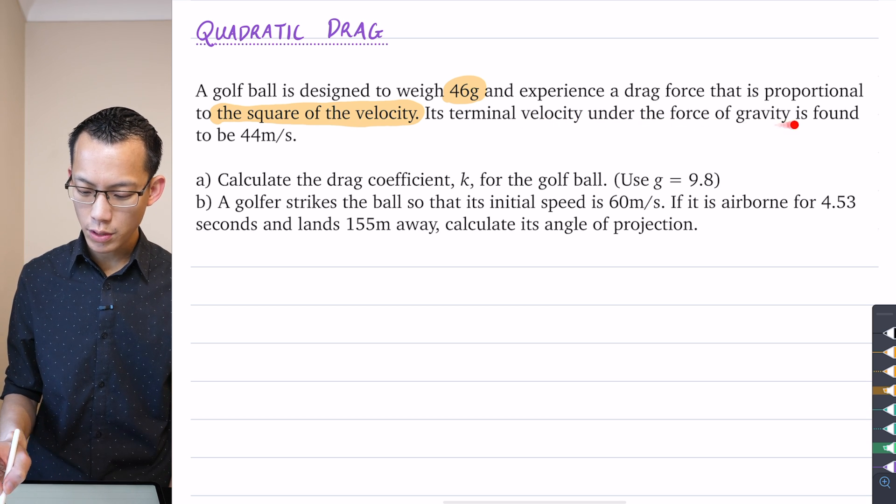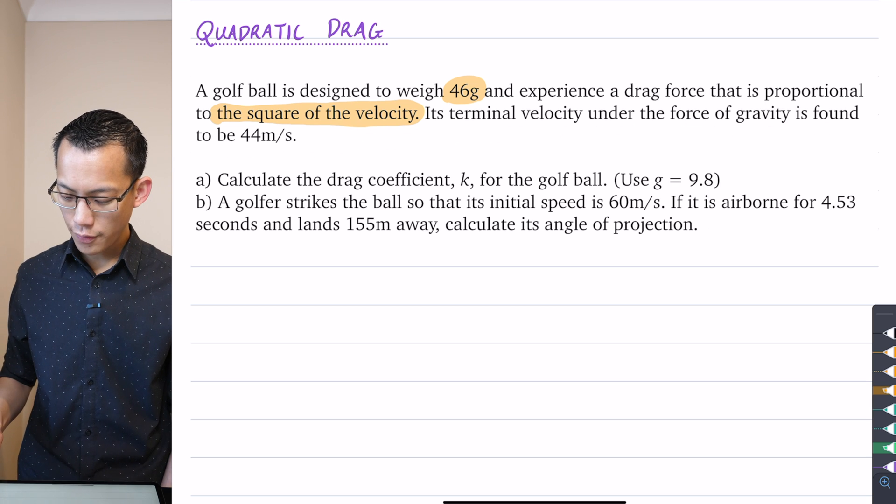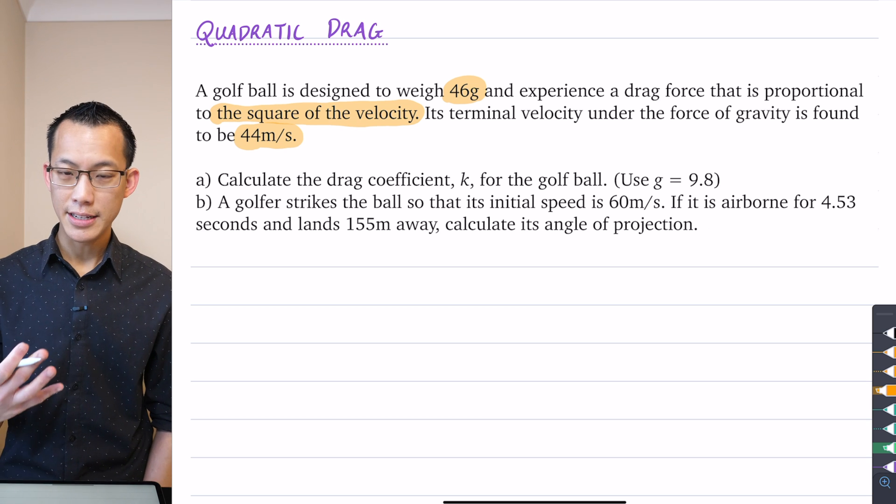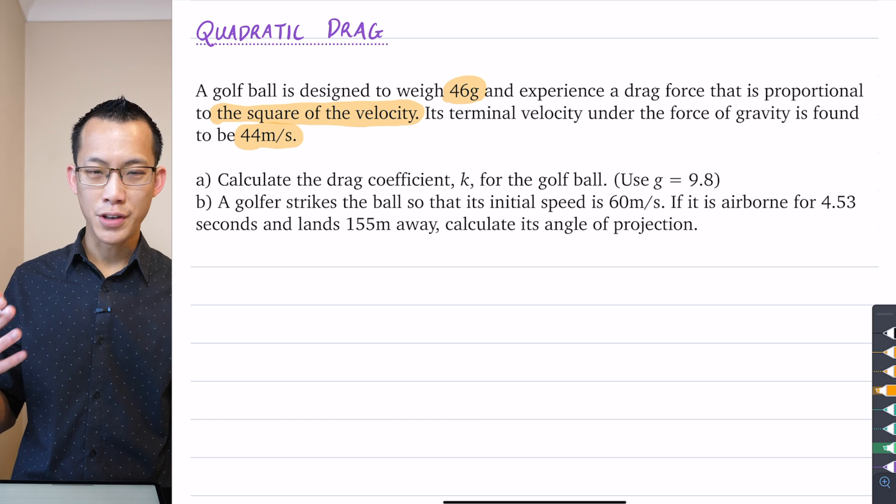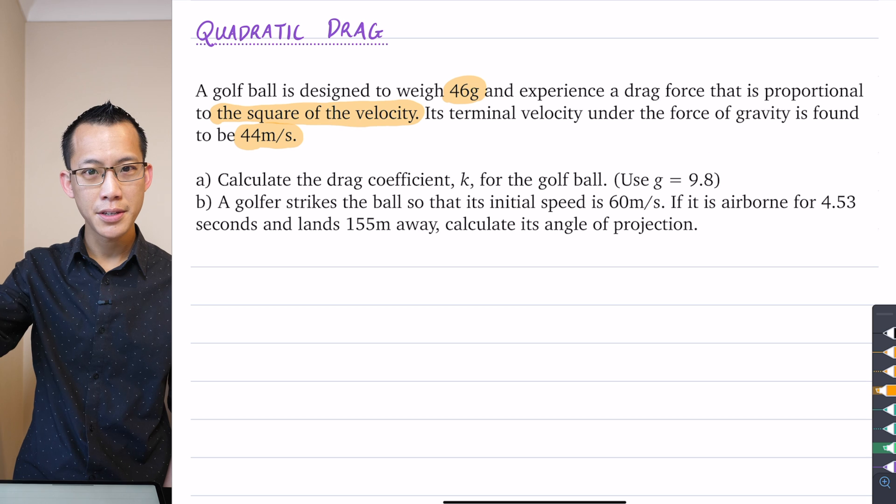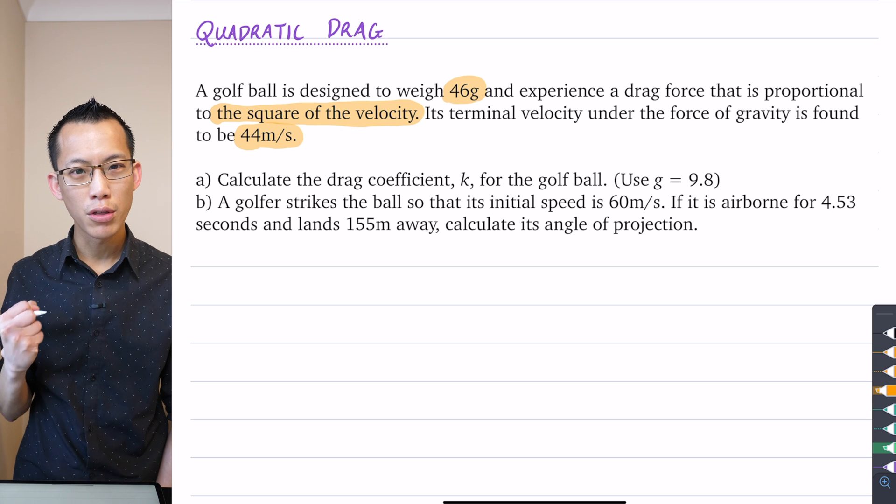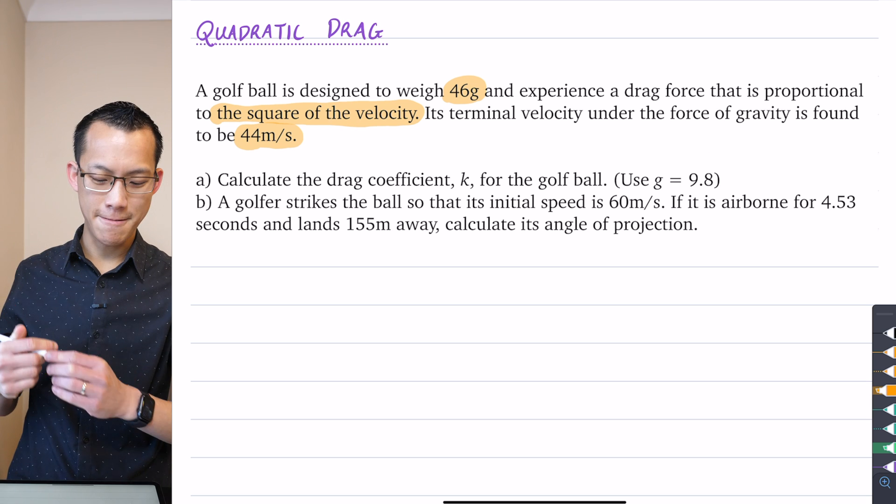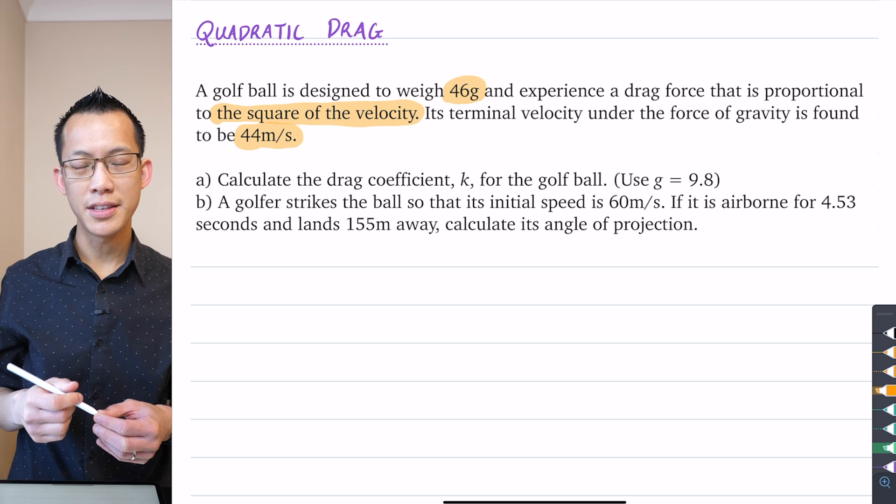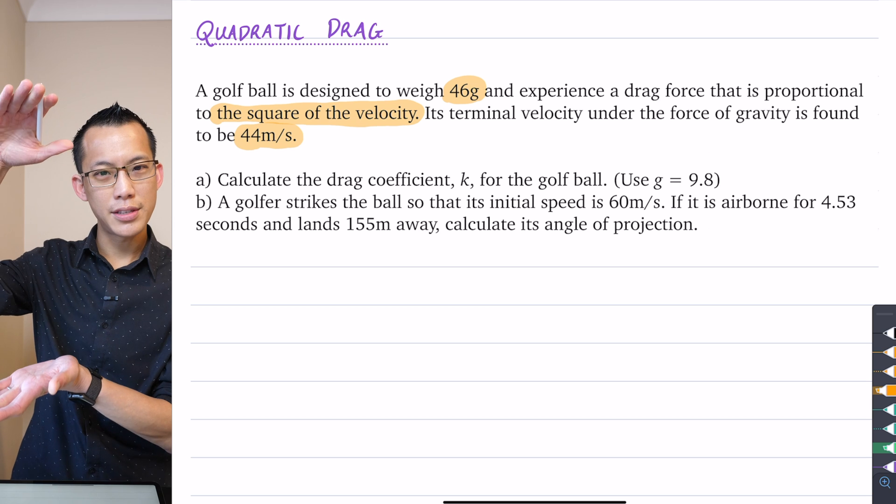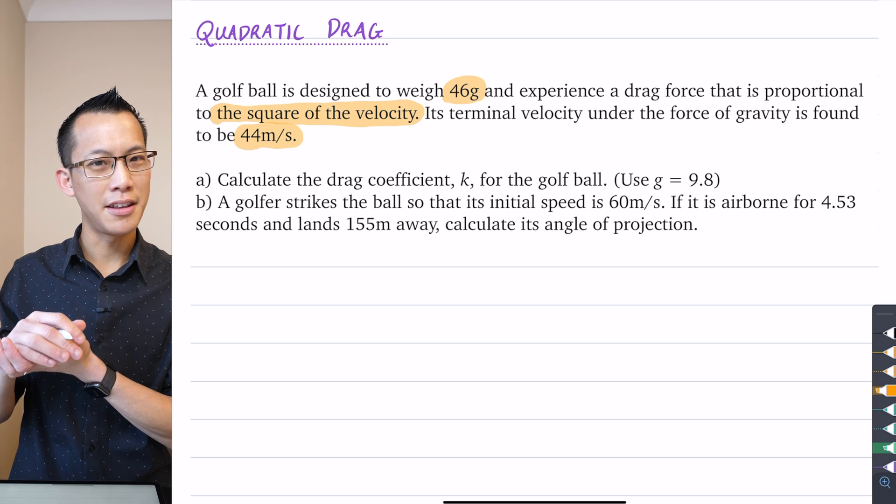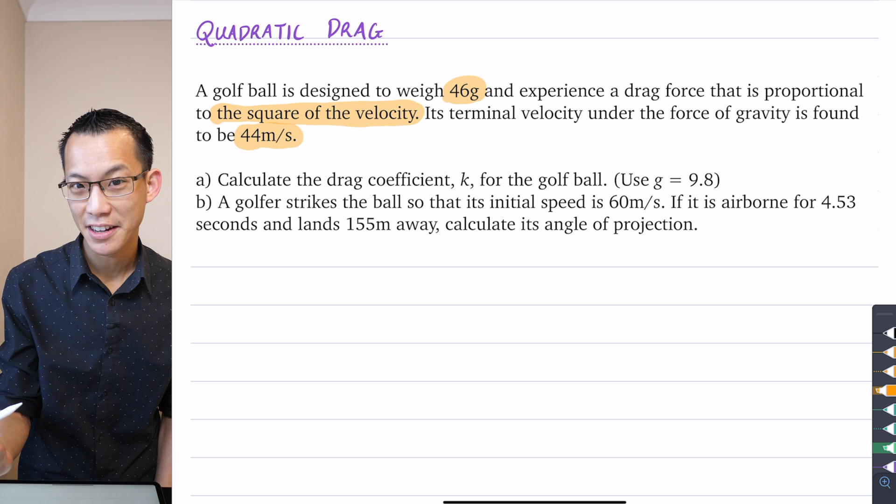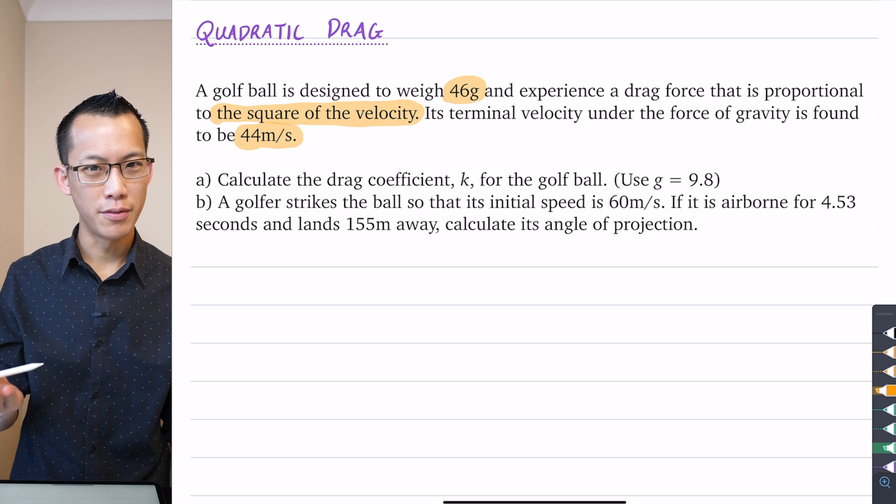Its terminal velocity under the force of gravity is found to be 44 meters per second. When you hear that sentence, you can imagine an object dropping from rest, pulled by gravity but resisted by air resistance. Eventually those things balance and there will be no more acceleration. It reaches or approaches terminal velocity.